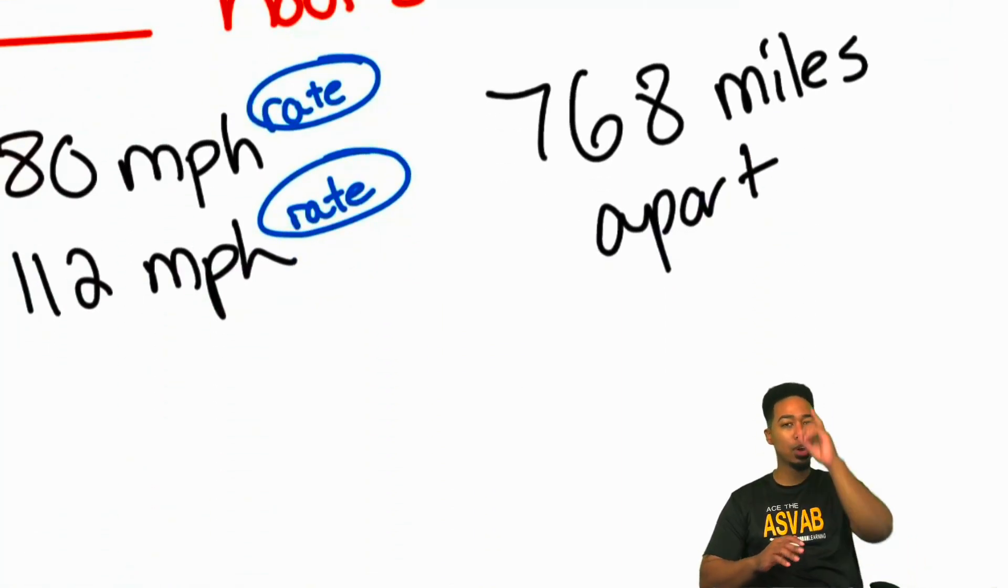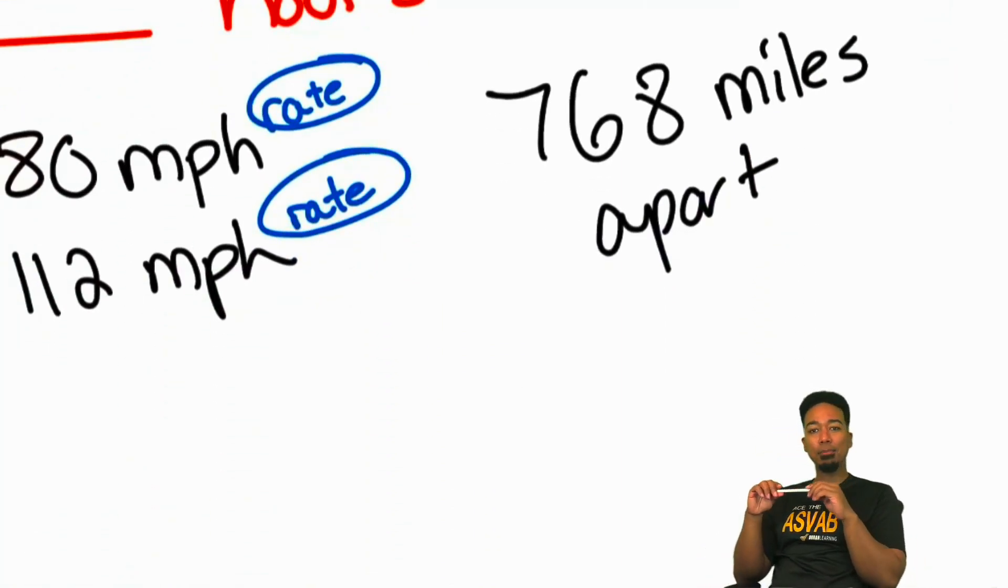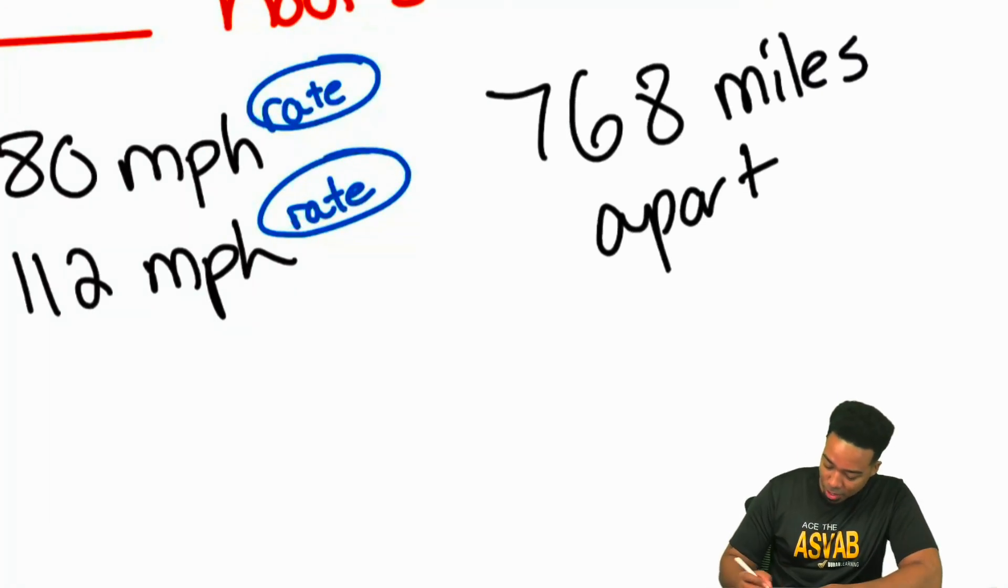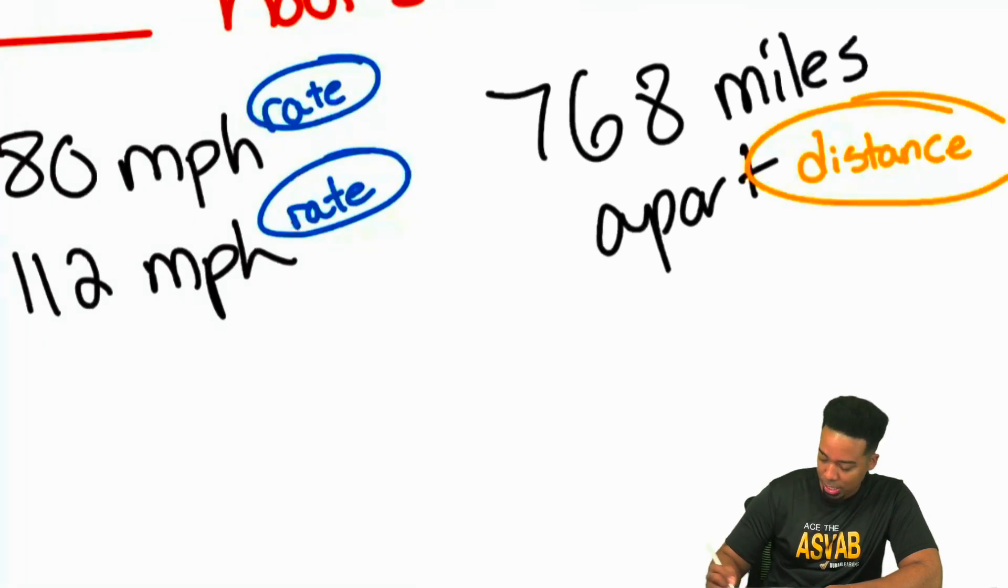But lastly, right over here, we have 768 miles apart, my party people. What kind of a unit is that? Yeah, that's just a straight up distance. So let's take advantage of that, let's write that out again. This is a distance.